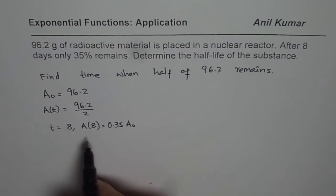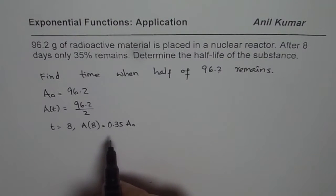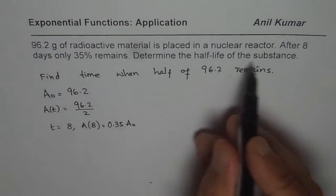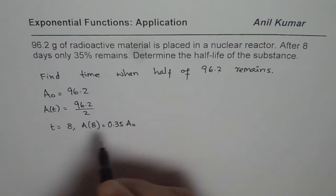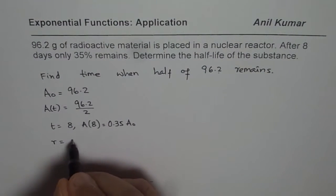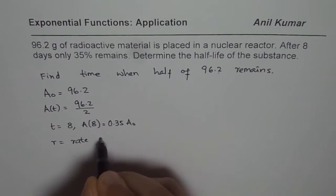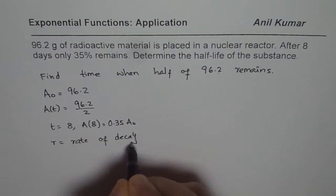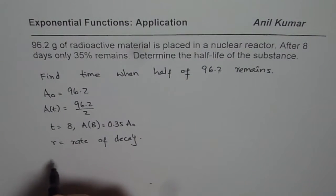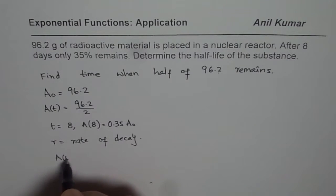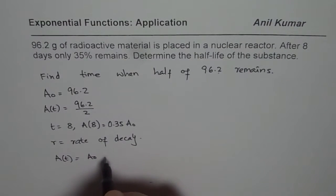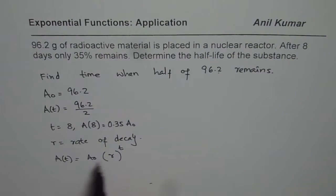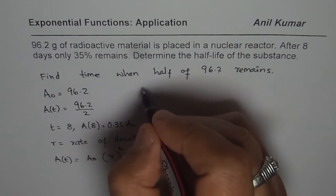Now with the help of this, we can first find the decay rate. And then we can find the half-life of the substance. So let us say, R is the rate of decay. In that case, our equation will be amount left after any instance of time will be A0 times R to the power of t. So that is the basic exponential equation with which we are going to work.